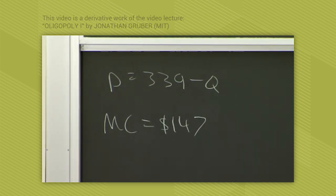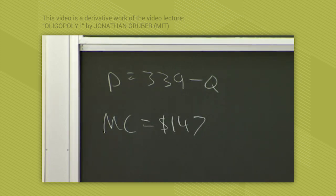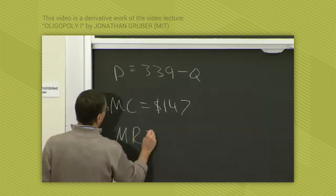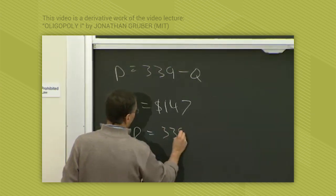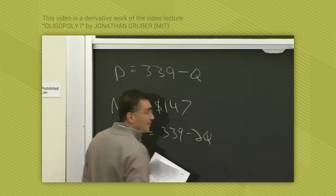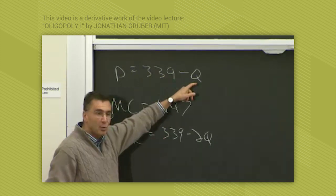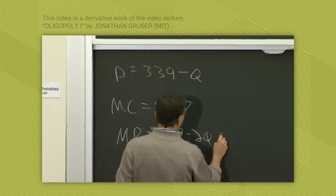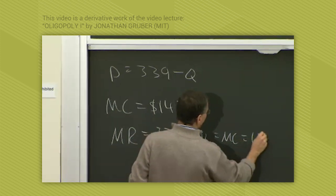Now, what would American Airlines do if it was a monopolist? If American Airlines was a monopolist, it would set marginal revenues, which are 339 minus 2Q by the same math we did before. You just multiply it through by Q and then differentiate, and you get 339 minus 2Q equal to marginal cost, which is $147.